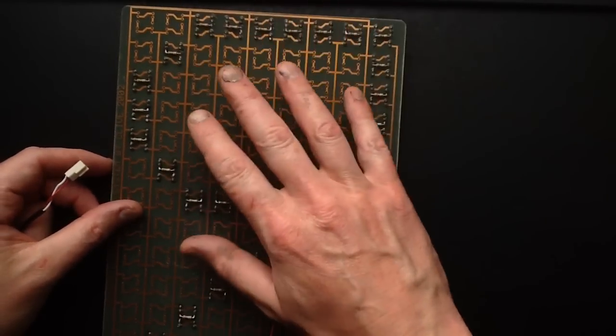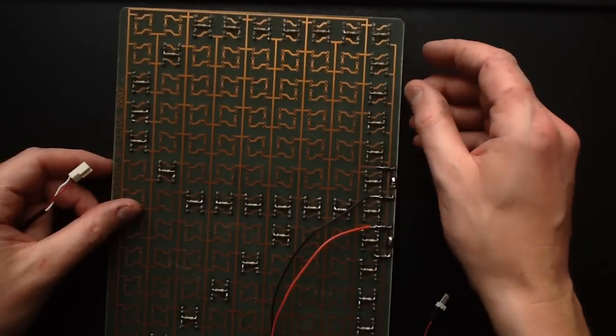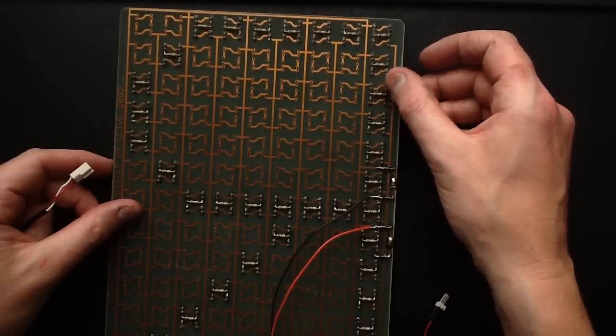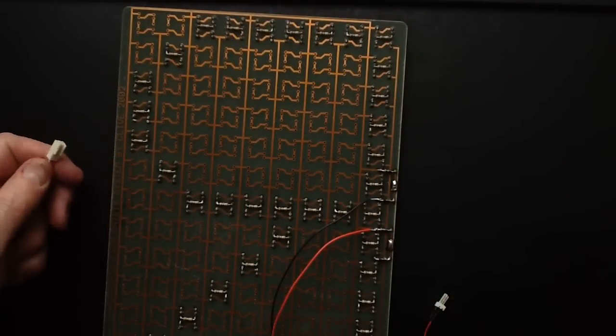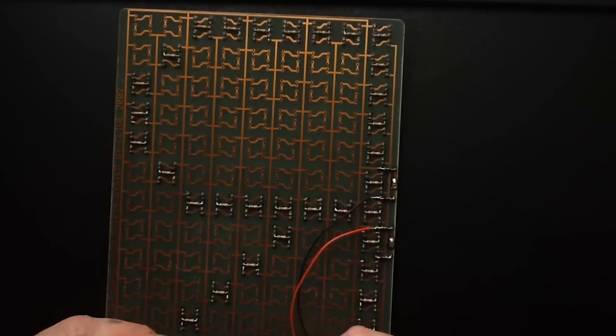And this is basically just a large parallel array of the pixels with the 4 LEDs and a resistor. And it was really, back then, designed for the standard 2 volt type LEDs, the gallium arsenide and gallium phosphide.